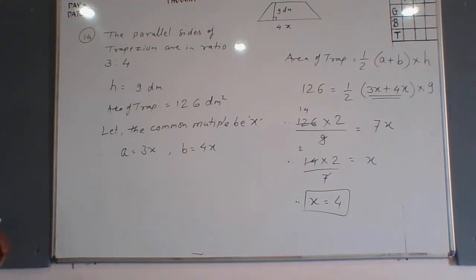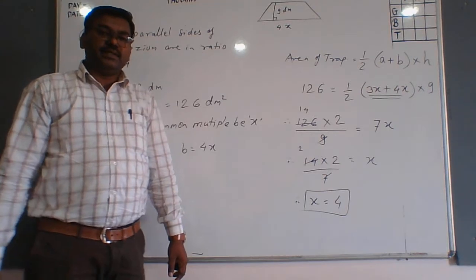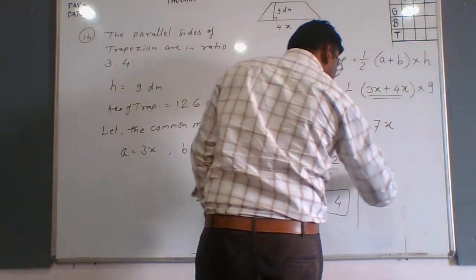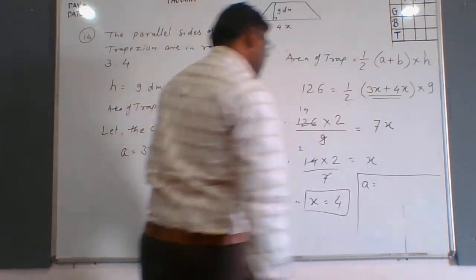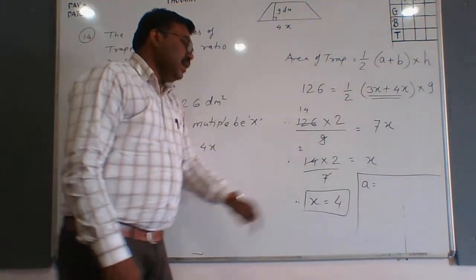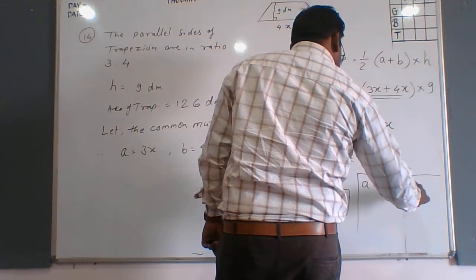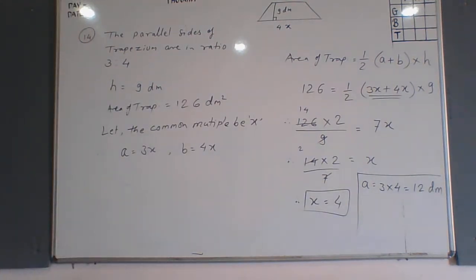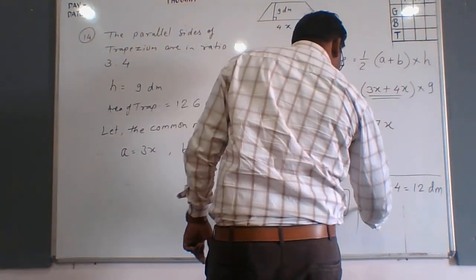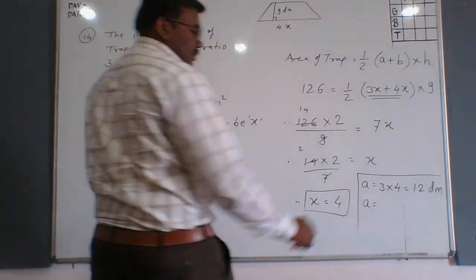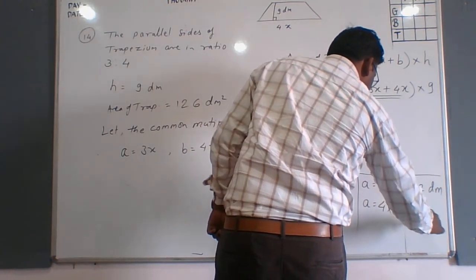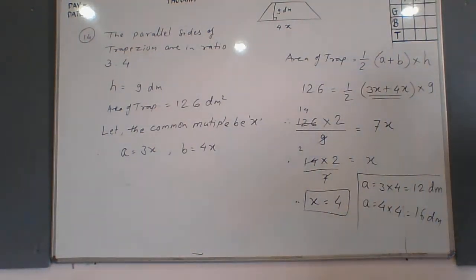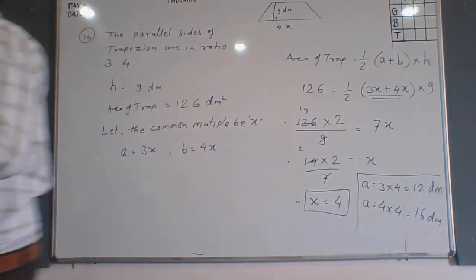Now we calculate the measurement of the parallel sides. Side A equals 3x, that is 3 into 4, which is 12 dm. And side B equals 4x, that is 4 into 4, which is 16 dm. These are the lengths of the parallel sides. Please note it down in your notebooks.